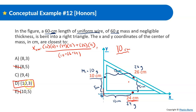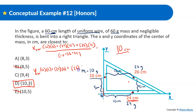Now confirming the y-direction: m1 is 10 grams at y = 5 (above origin); m2 is 24 grams at y = 0 (at the bottom); m3 is 26 grams at y = 5. Center of mass in y = (10×5 + 24×0 + 26×5) / 60 = (50 + 0 + 130) / 60 = 180/60 = 3 centimeters. So the answer is confirmed: (10, 3) centimeters.